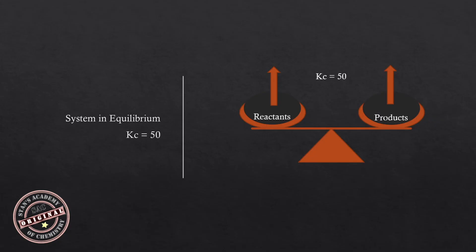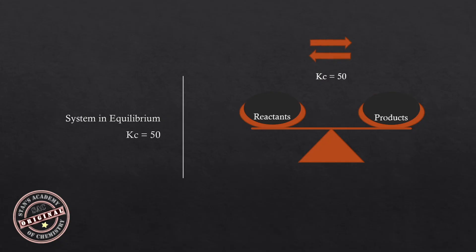At equilibrium, the rates of the forward and backward reactions achieve constancy, and the system is back in the equilibrium state.